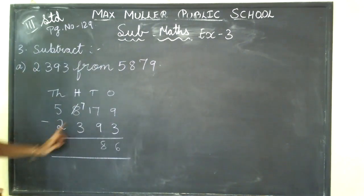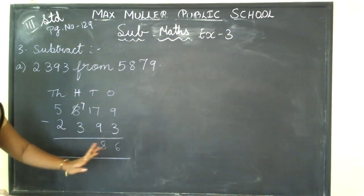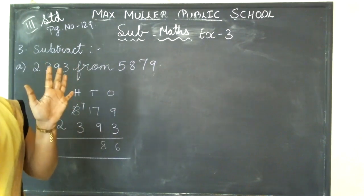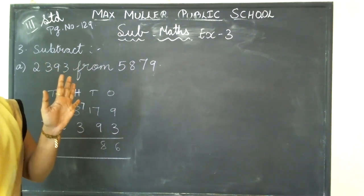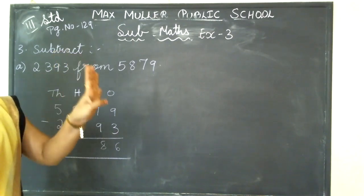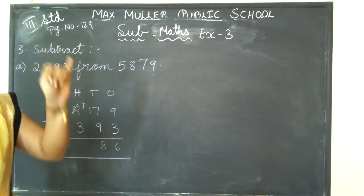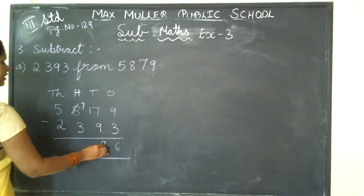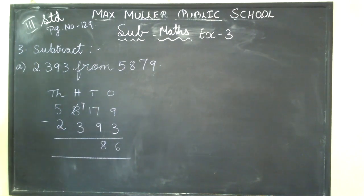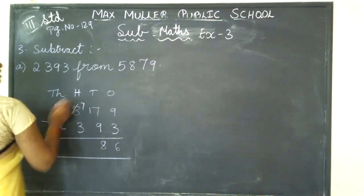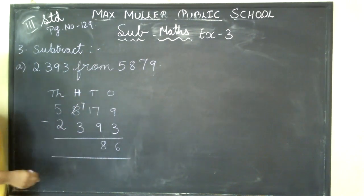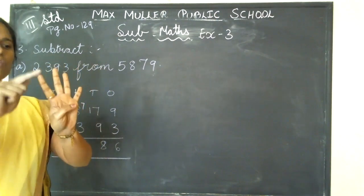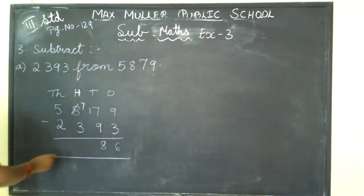Understood? 17 minus 9 — keep 9 on your fingers, start counting backwards: 17, 16, 15, 14, 13, 12, 11, 10, 9. The next number is 8, so write 8. Next, in the hundreds place: 7 minus 3. From 7 if I minus 3, counting: 1, 2, 3 — how much is remaining? 1, 2, 3, 4. So write 4.